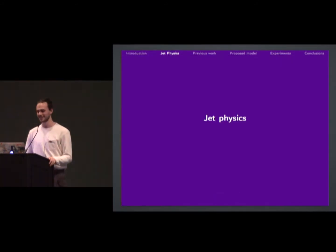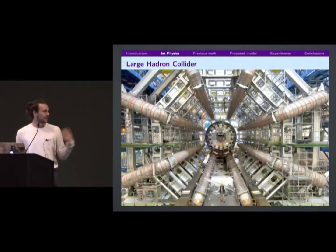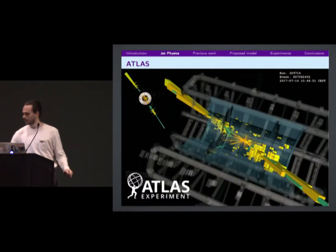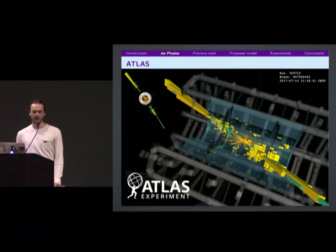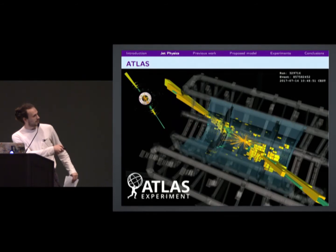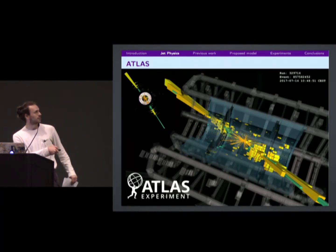A primer on jet physics: the Large Hadron Collider is in Switzerland. They're colliding particles together and looking to observe interesting new physical phenomena. In a typical picture from the Atlas experiment, there's a collision in the middle, a spray of particles going outwards, and these particles cluster together into sprays in either direction — these are known as jets.